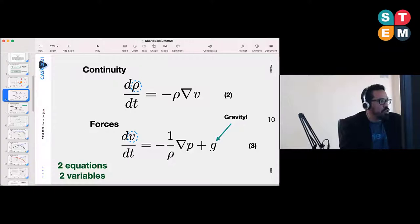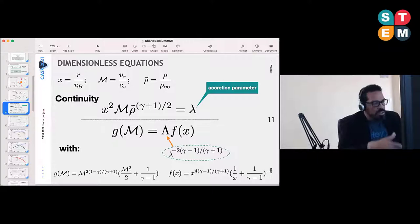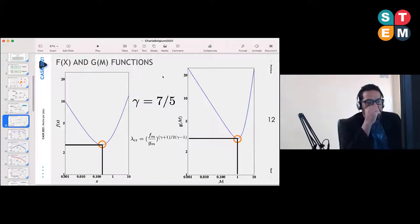After fiducial computations and a formulation that allows us to write dimensionless equations, we have these two final equations. This is the continuity equation where this lambda here is called an accretion rate parameter, key to solve and to get the solutions we are going to show in a few slides ahead. These two functions g and f have special properties and they are linked through this capital Lambda here where the accretion rate parameter is involved.